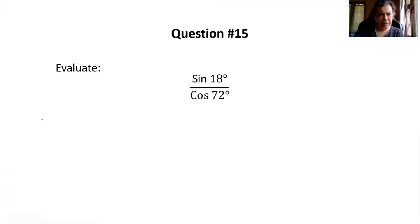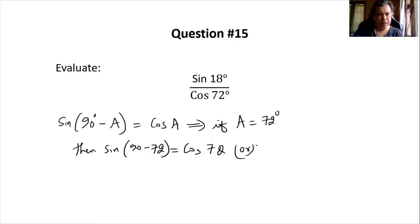In the previous session we have already seen sine of 90 degrees minus A is equal to cos A. In this, if A is replaced with 72 degrees, then sine of 90 minus 72 should be equal to cos 72, or we can say sine of 18 degrees is equal to cos 72 degrees.